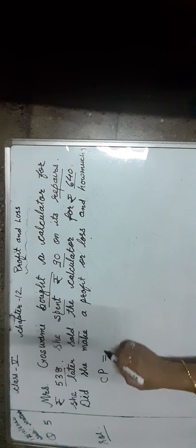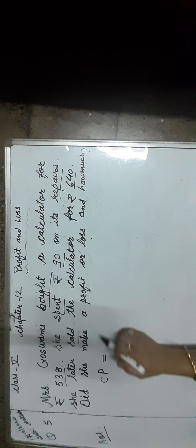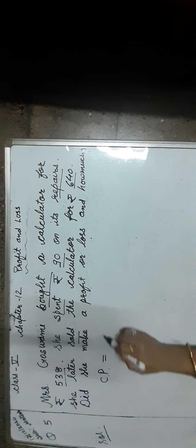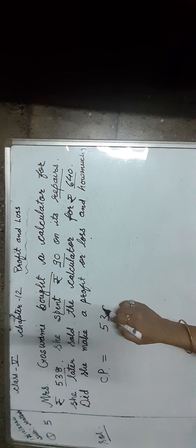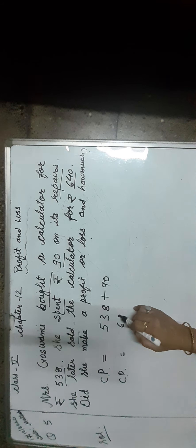So overhead expenses such as transportation, electricity bill, labor charges, and repairing charges are added to the cost price. So the repairing charges have to be added to the cost price. So CP is equal to Rs. 538 plus 90, which is equal to Rs. 628.